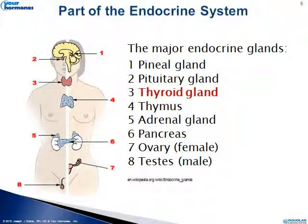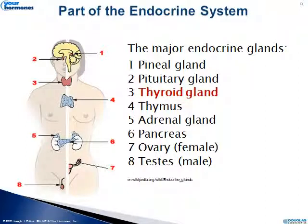The thyroid gland is part of a much bigger system — the endocrine system. Many times the symptoms that the public, and sometimes we, associate with thyroid problems could also be because of other endocrine disorders such as adrenal dysfunction or gonadal dysfunction. So while we're focusing on the thyroid hormone, keep in mind that some of the symptoms may be other conditions as well, and that will be discussed when we talk about clinical evaluation.